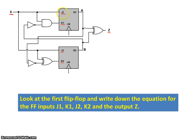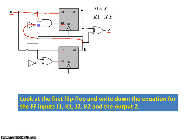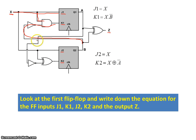J1 is equal to the input X. K1 is equal to X AND NOT B. Similarly, J2 is also X, and K2 is X XOR NOT A. And finally, for the output Z, it's A XOR B.